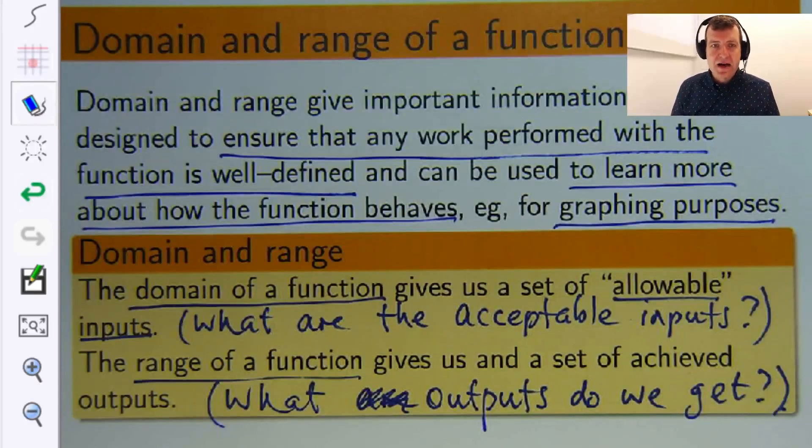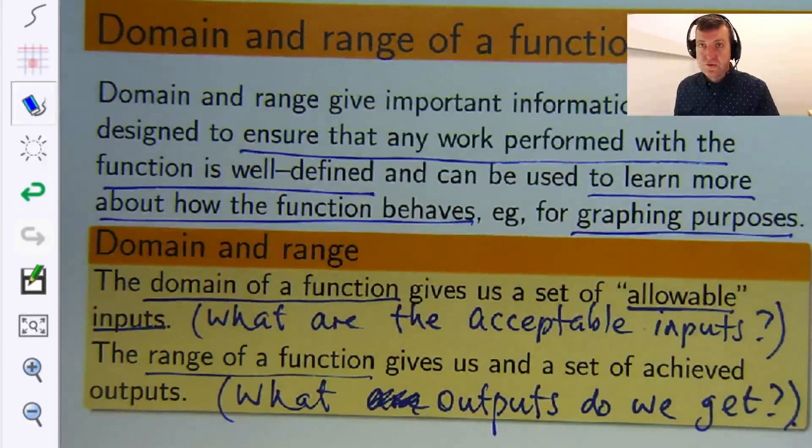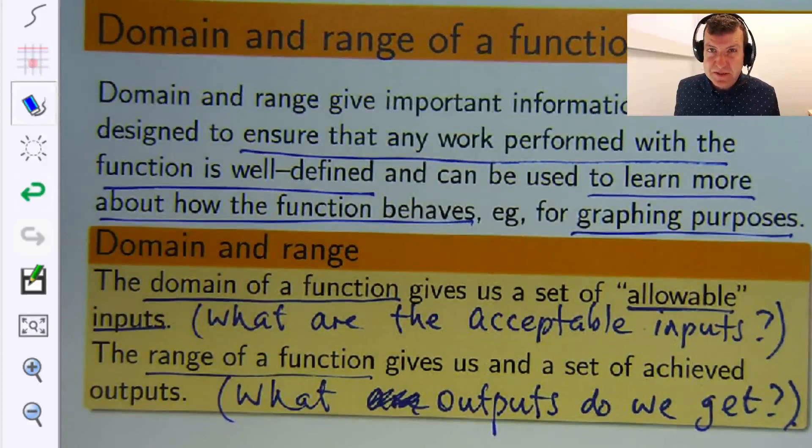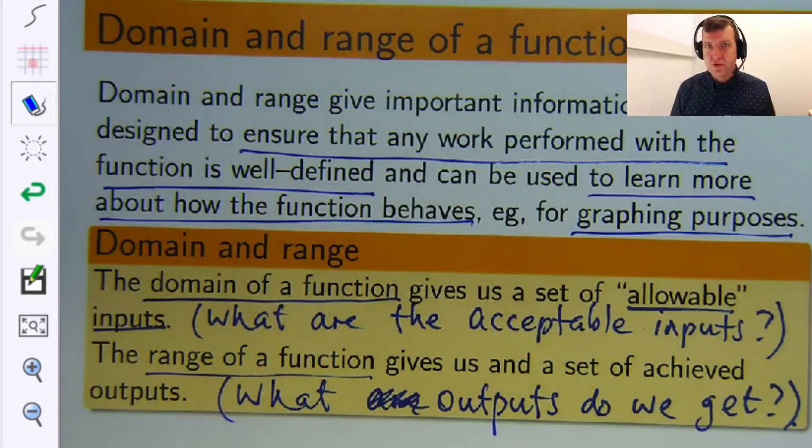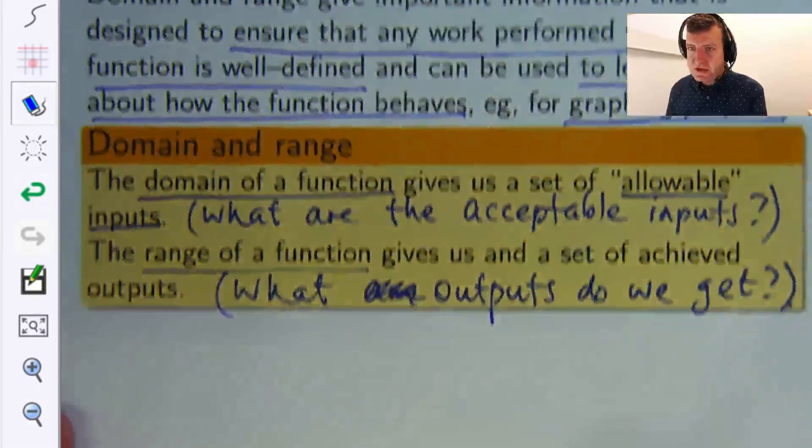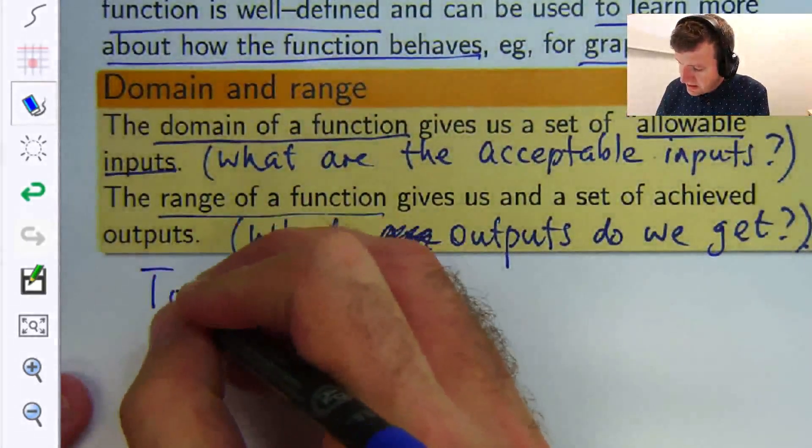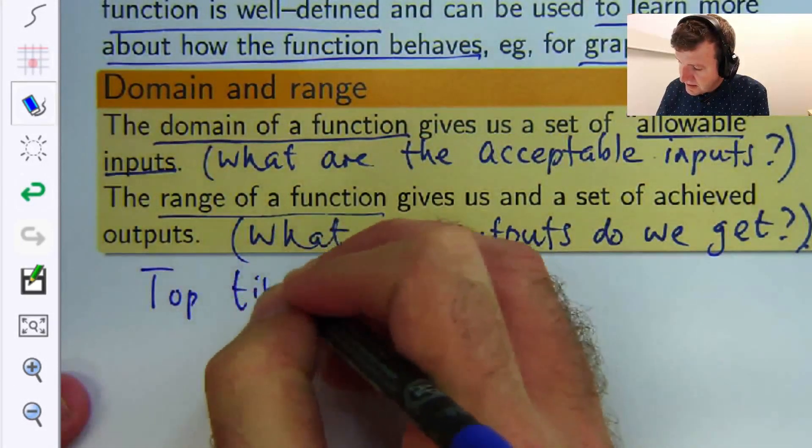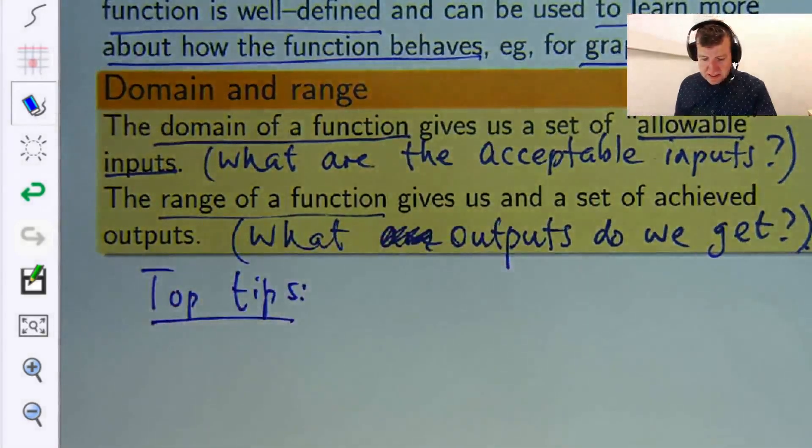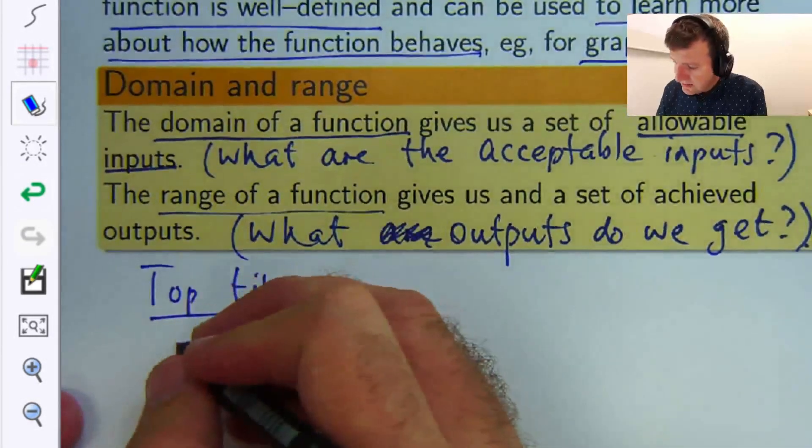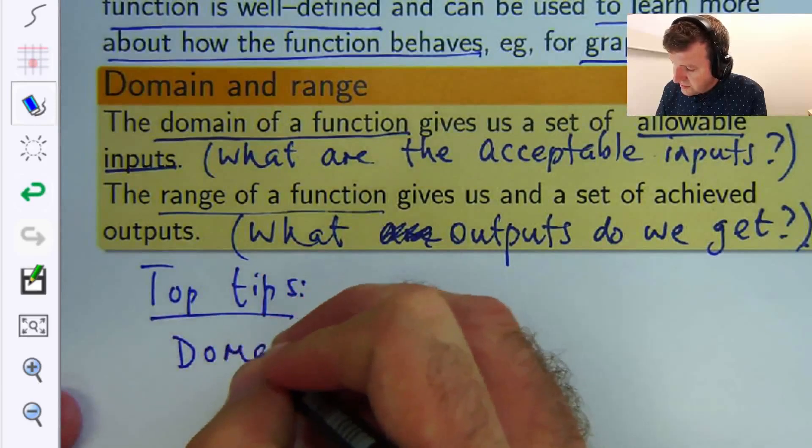All right, so that's the simplest way in my opinion of explaining domain and range. Now there are some basic rules or top tips when you're doing problems. Let me just make a little note of those. These are my top tips. There are probably more than this but I'm just going to list two for each.